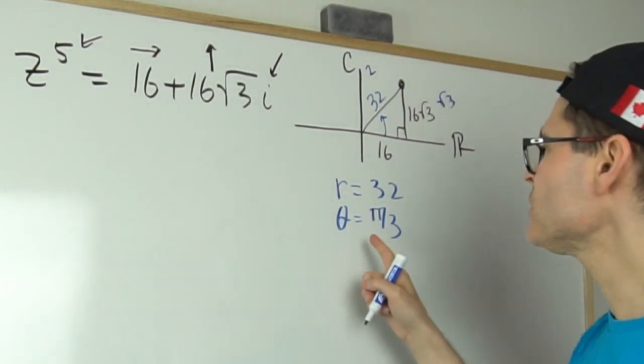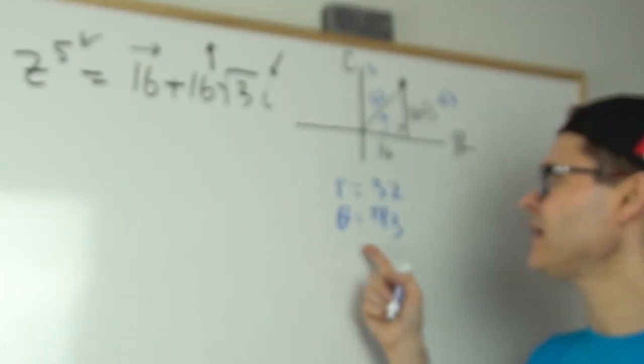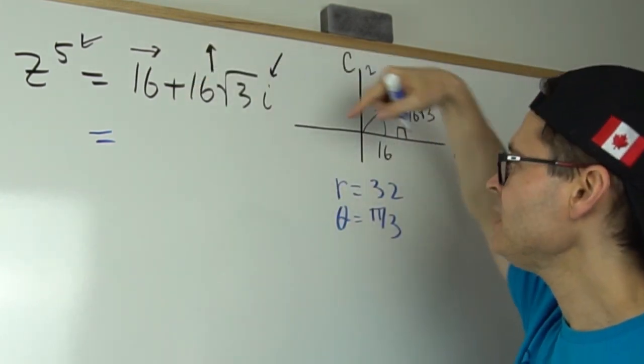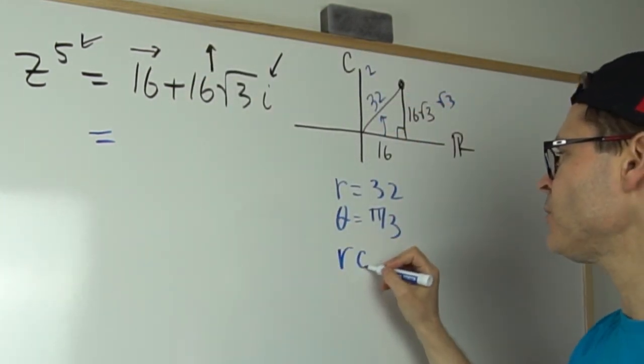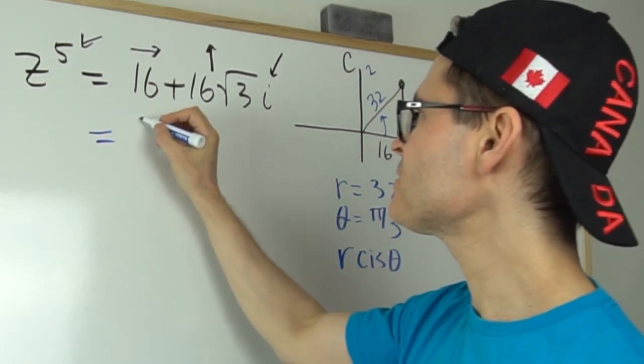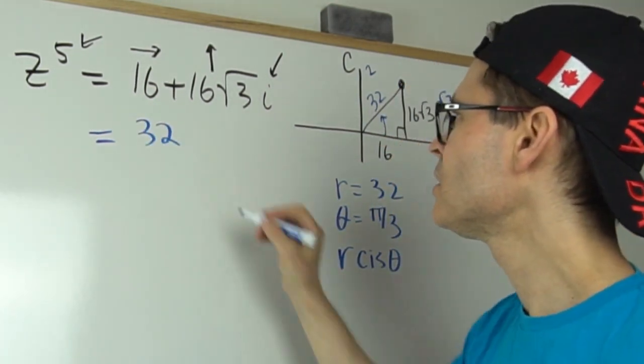So the two real critical numbers I need are the r and the θ. What I can do now is rewrite this complex number in r-cis form.